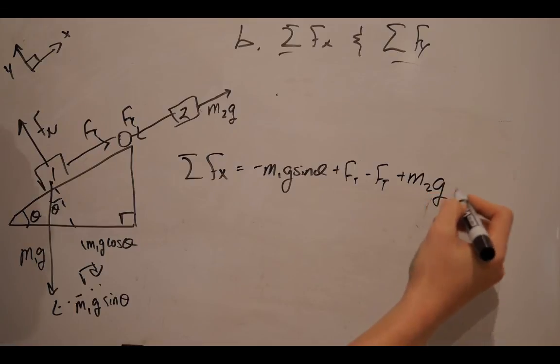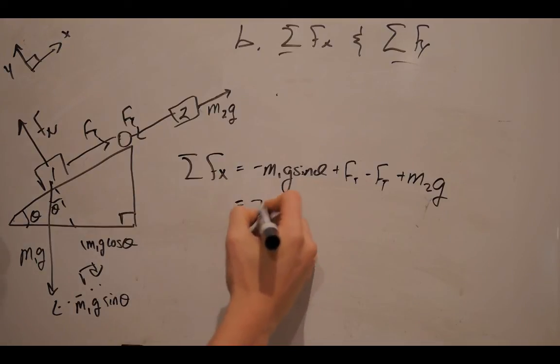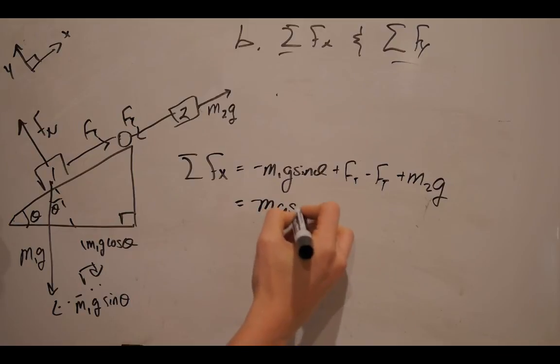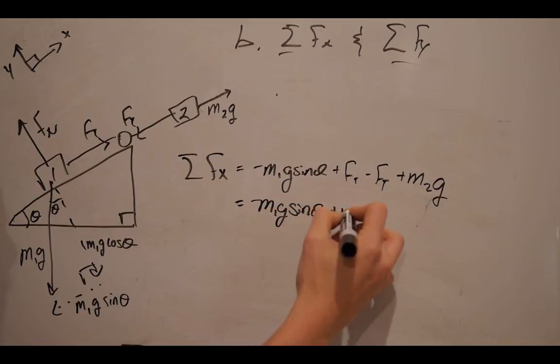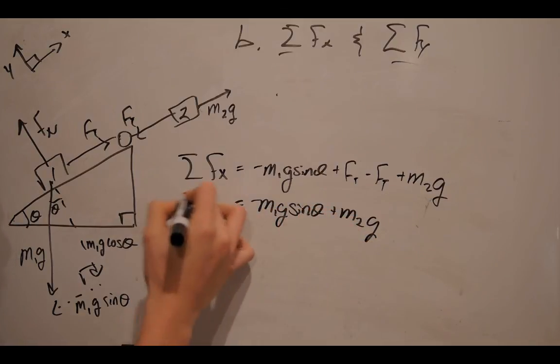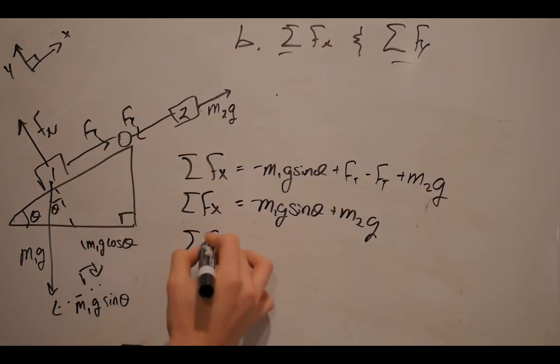This, of course, assuming that anything going to the right is positive. If we were to clean this equation up, we have M1g sin theta plus M2g are the forces along the x direction. And we will do the same process for the net force in the y direction.